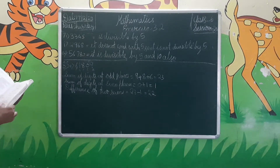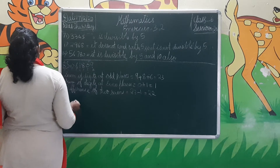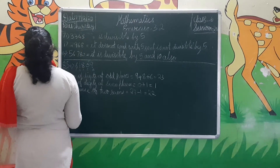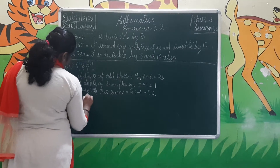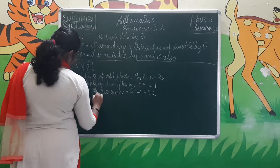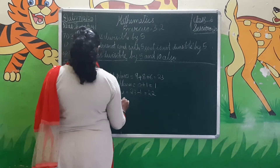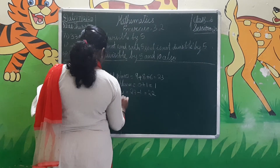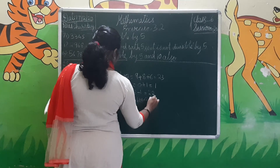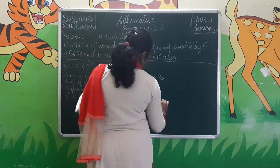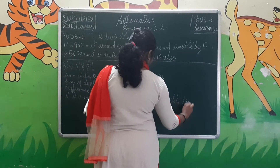22 is a multiple of 11 (11 × 2 = 22). Therefore, 61,809 is divisible by 11.